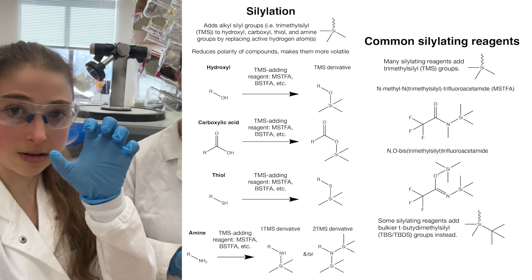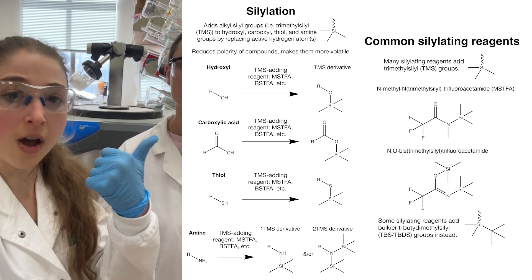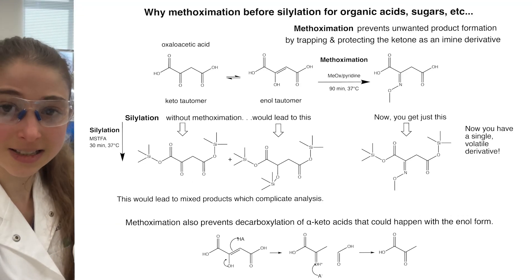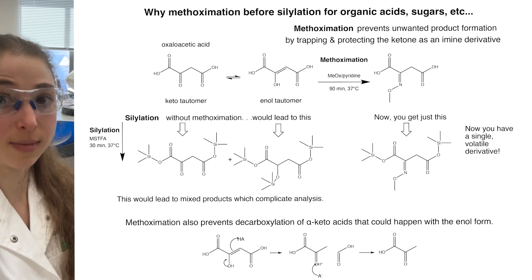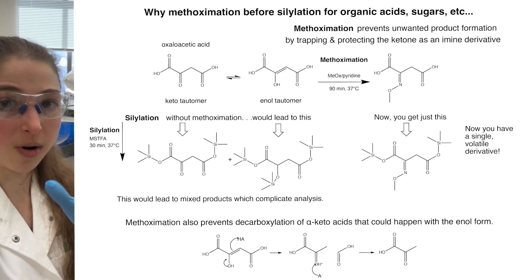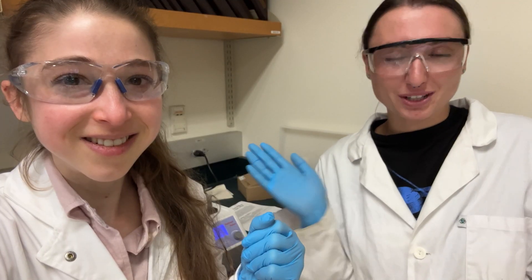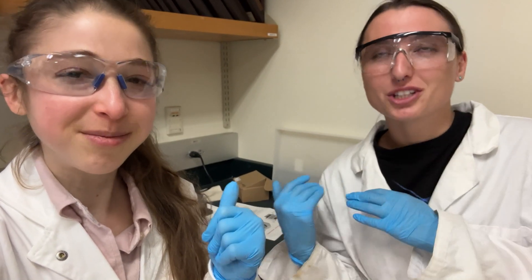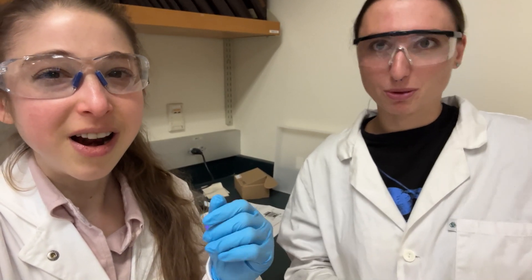Those TMS groups get added to things like our hydroxyl groups and the ends of our carboxylic acids. If we hadn't done the methoxymation first, we would get more products, which would make things really annoying to tease apart. We want fewer products in the end, so we do this derivatization to find what we want more easily.